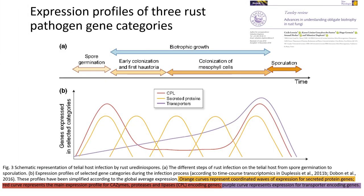This is a figure taken from the Tansley review by Lorrain et al. a few years ago, which shows the expression of pathogen genes. The secreted proteins, including the effectors — those orange peaks — show that there are different effectors being produced as a series of waves or pulses during the infection process, through to just before sporulation or the eruption and production of new spores. So the effectors important in establishing disease are then replaced by others in terms of gaining control, manipulating, and finally replication.